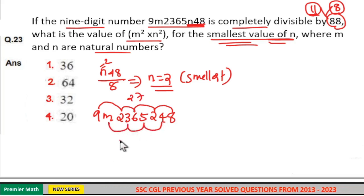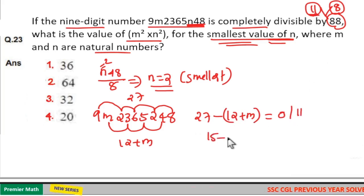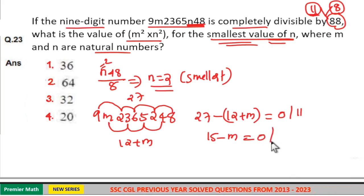Now odd place sum minus even place sum should be 0 or 11. That is 27 minus (12 plus m) should be 0 or 11. Then it is divisible by 11. Here 27 minus 12 equals 15. So 15 minus m should be 0 or 11.